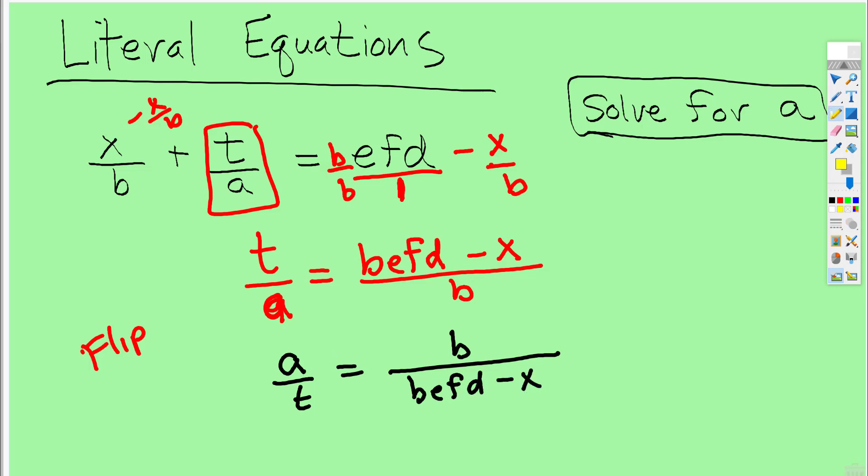Now to get a by itself, the only thing left that we have to do is multiply both sides by t. And now we have a is equal to b times t over the expression befd subtract x. And that's it. That's all there is to it.